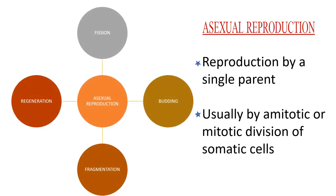In animals there are four major types of asexual reproduction: fission, budding, fragmentation, and regeneration.